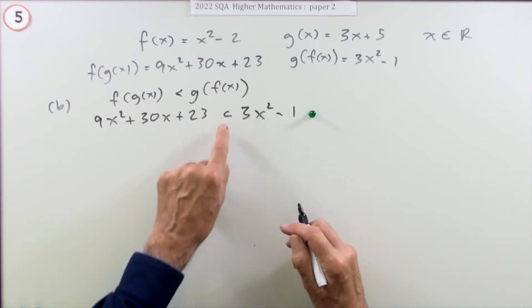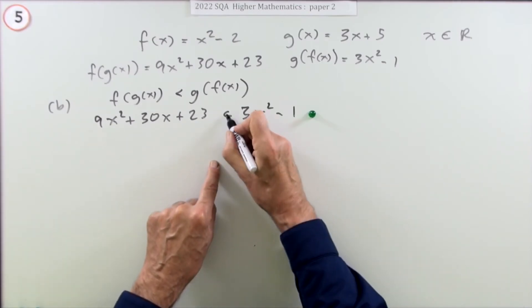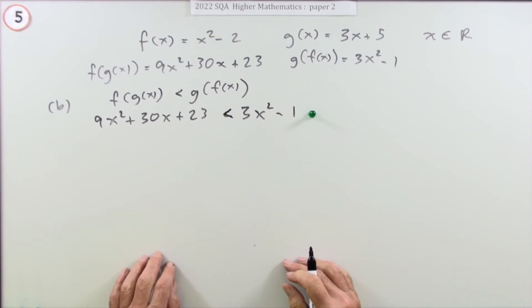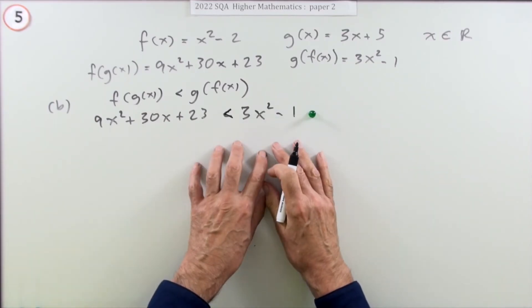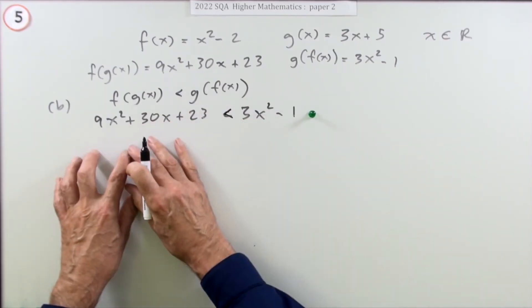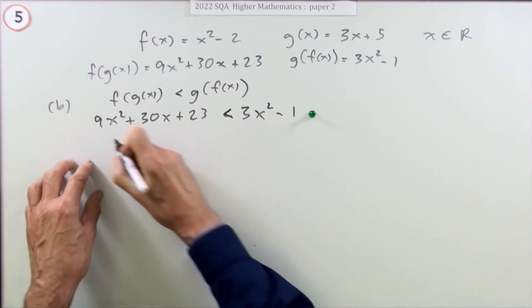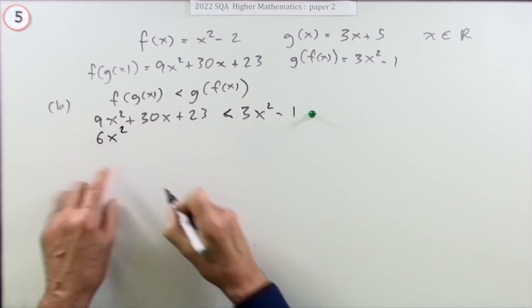This is a quadratic inequality, not an equation. But the way you deal with it is still take everything to one side and leave zero on the other. 9 minus 3 gives 6x squared.